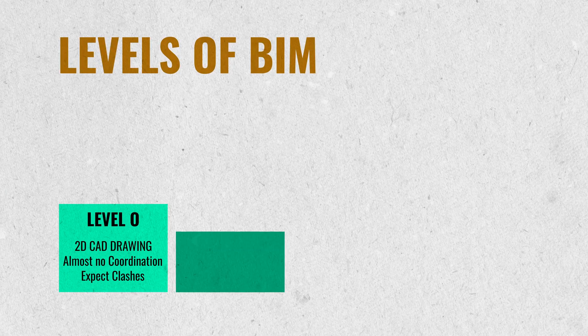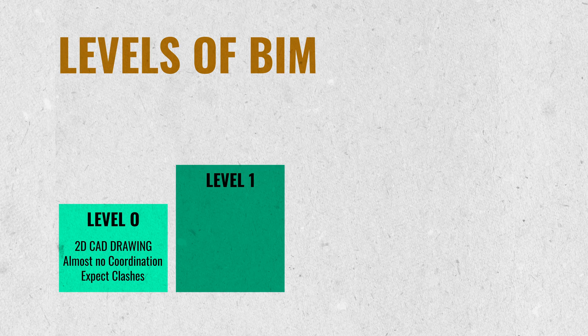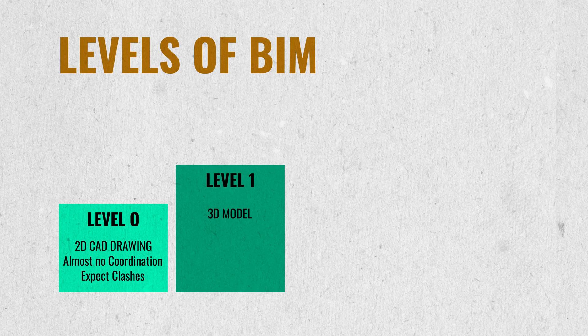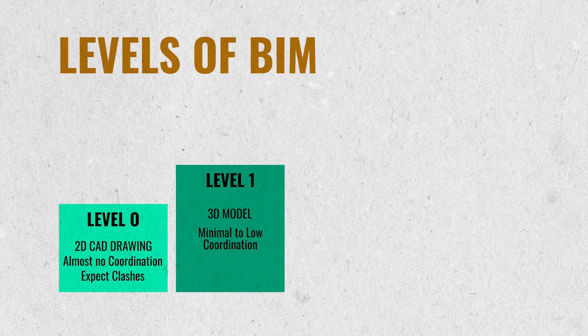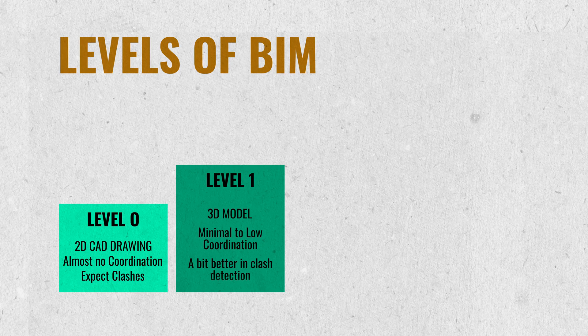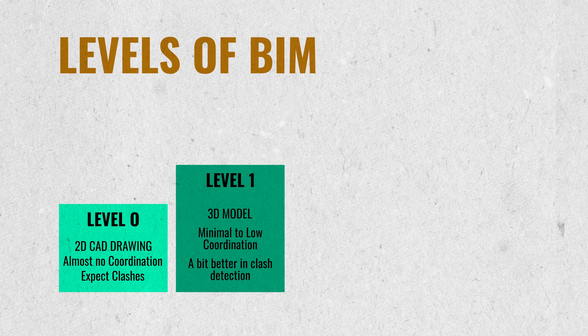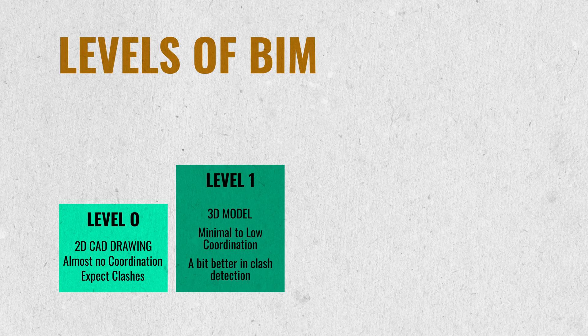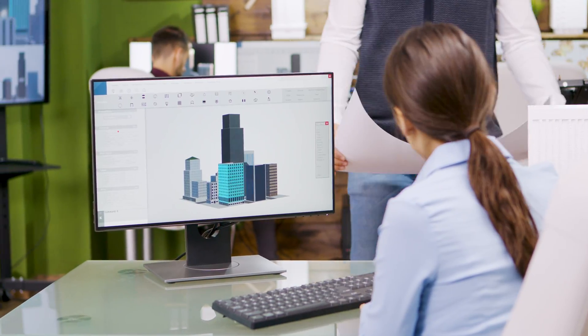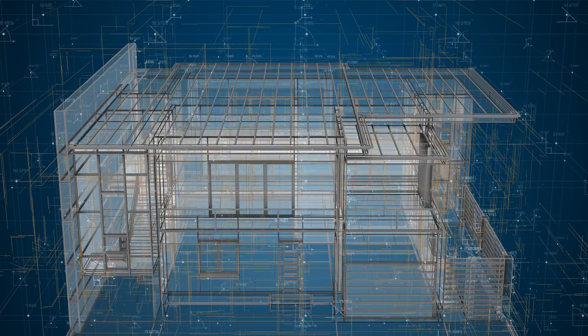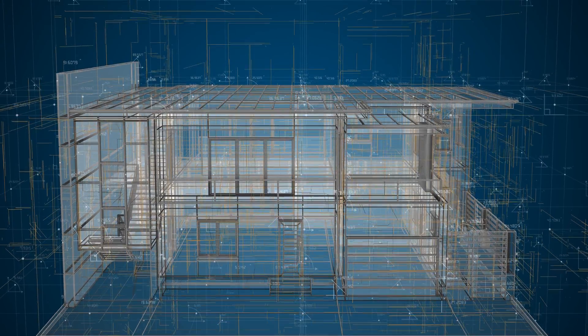Level one moves into a 3D model, typically when you're using Revit, with very little to minimal coordination. You're using it particularly as a base and building a 3D model, so there's slightly better clash detection. The builder can spin the model around for specific questions, but there's very minimal coordination at level one — so you're getting slightly better than level zero, but really not that much.